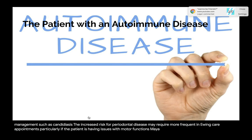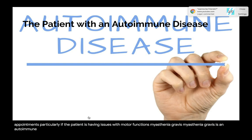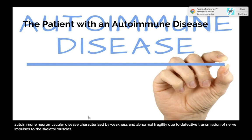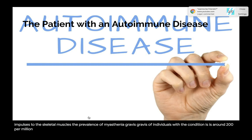Myasthenia gravis is an autoimmune neuromuscular disease characterized by weakness and abnormal fatigue due to defective transmission of nerve impulses to the skeletal muscles. The prevalence is around 200 per million individuals in the United States.